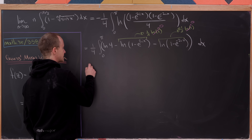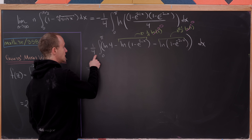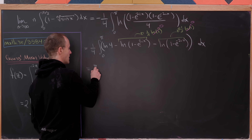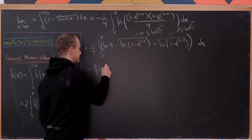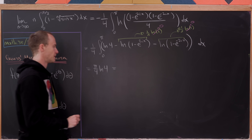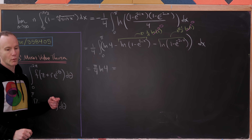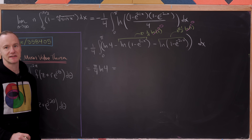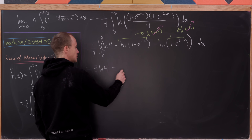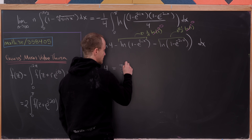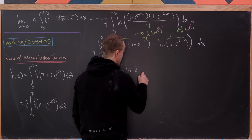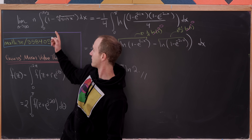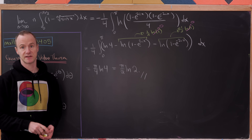That leaves us with 1/4 times the integral from 0 to π of ln(4), which is π/4 times ln(4). Bringing one factor of 2 from the denominator into the natural log and taking the square root of 4 gives 2, so we arrive at π/2 times ln(2). And there we have it — the value of the limit of our integral is π/2 · ln(2).